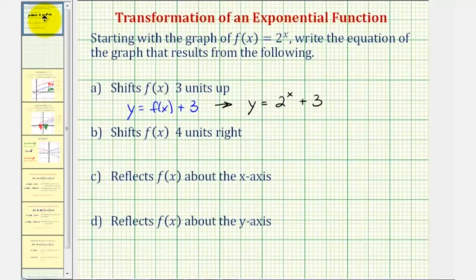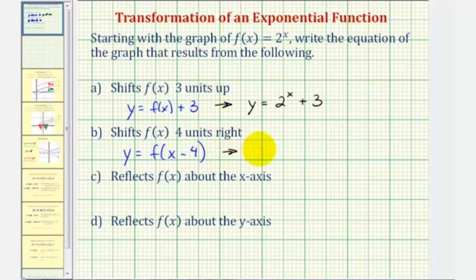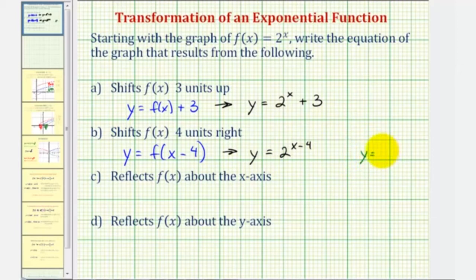So if we want to shift our function right four units, we want y equals f of the quantity x minus four, which means our equation would be y equals two raised to the power of, in parentheses, x minus four. To enter this into online homework, you do want to be careful — these parentheses indicate that the exponent is x minus four.